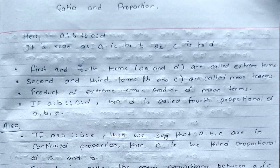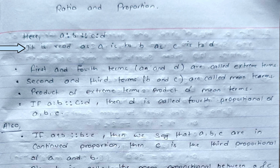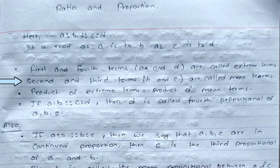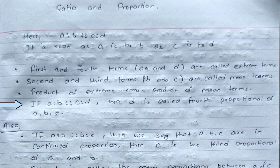Before starting today's video I would like to share some basic information regarding ratio and proportion. Here on the screen you can see: a is to b as c is to d. The first and fourth terms, which are a and d, are called extreme terms. The second and third terms, which are b and c, are called the mean terms of the given ratio.